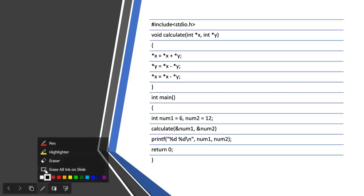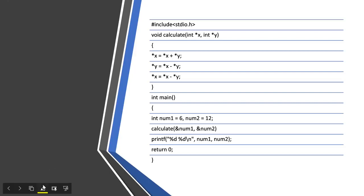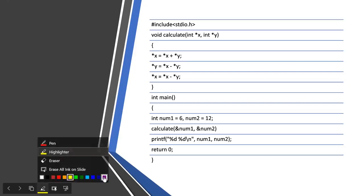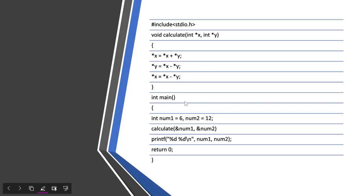Let me take this highlighter so I can help you with this. In the main function, num1 equals 6 and num2 equals 12. We are calling the calculate function and passing num1 and num2. You can see the ampersand is used, which means we are passing the address of num1 and num2.